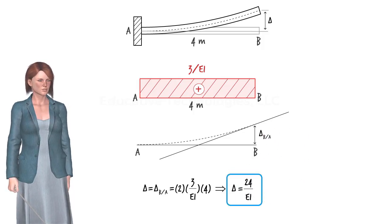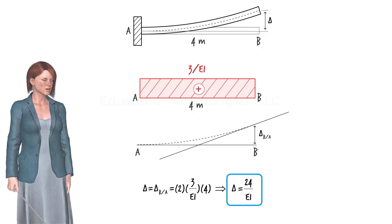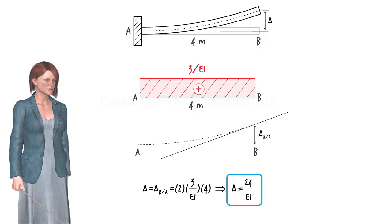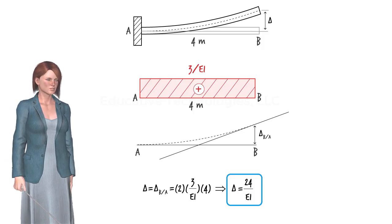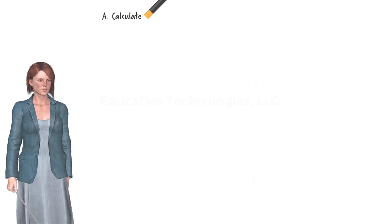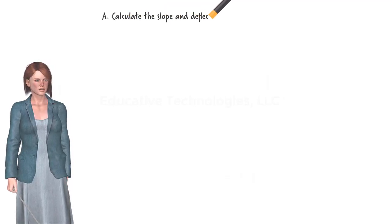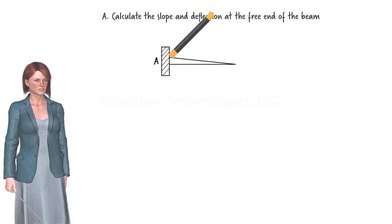Generally speaking, the second moment area theorem enables us to determine both slope and deflection in beams, whereas the first moment area theorem can be used for calculating slopes only. Now it is your turn — use the moment area method to solve the following problems.